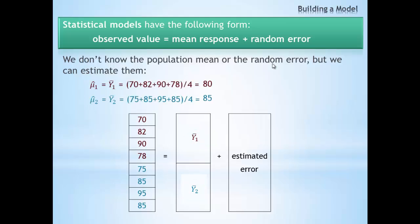We place the sample means, the y bars from each group, into the appropriate sections of the mean response to demonstrate that each observation comes from a group with a particular estimated mean value.